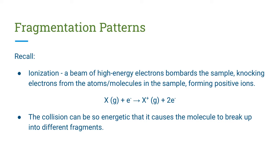In terms of how the mass spectrometer works, part of the function is the ionization stage. In this stage, a beam of high-energy electrons bombards the sample and knocks electrons off the atom or molecule, forming positive ions. It's really important to note that it is only the positive ions that are detected in a mass spectrum. You get different types of fragmentation happening where molecules break up into smaller pieces, and by looking at the mass differences between those pieces, we can piece together the puzzle of what that structure is.